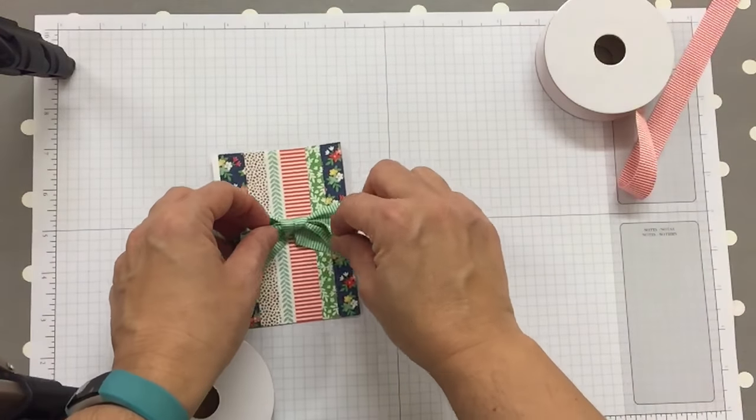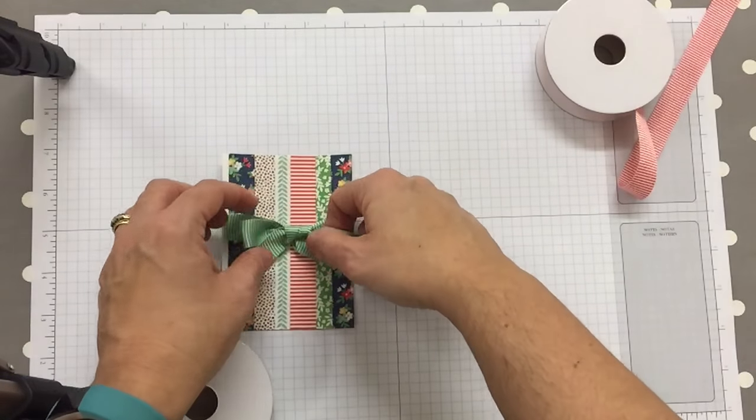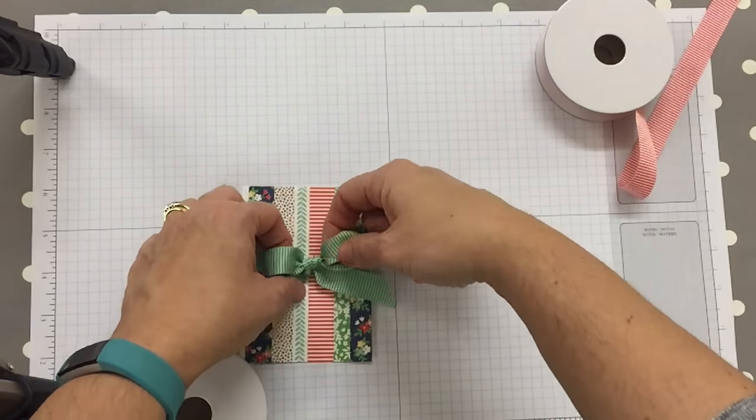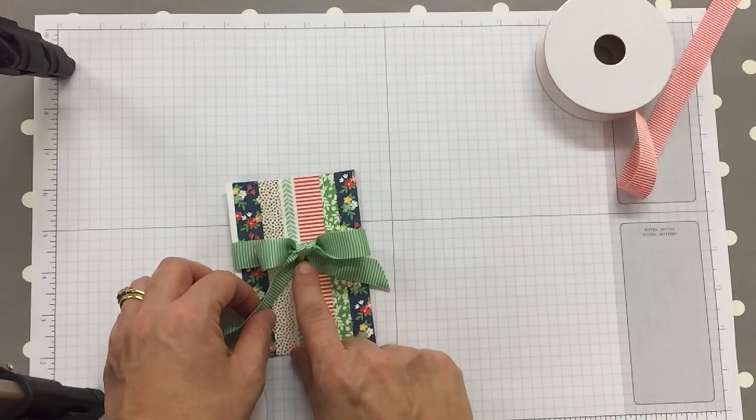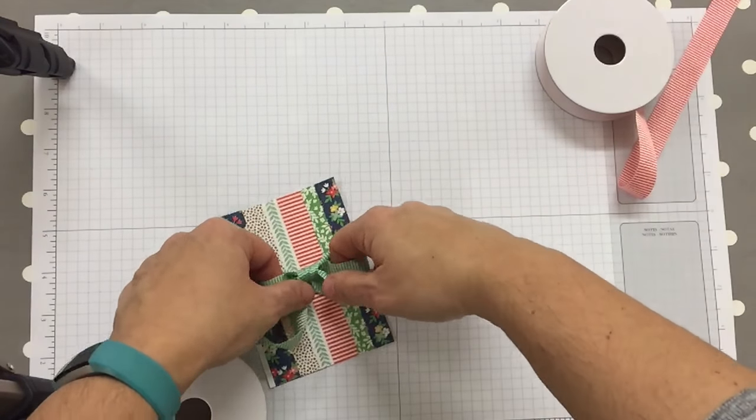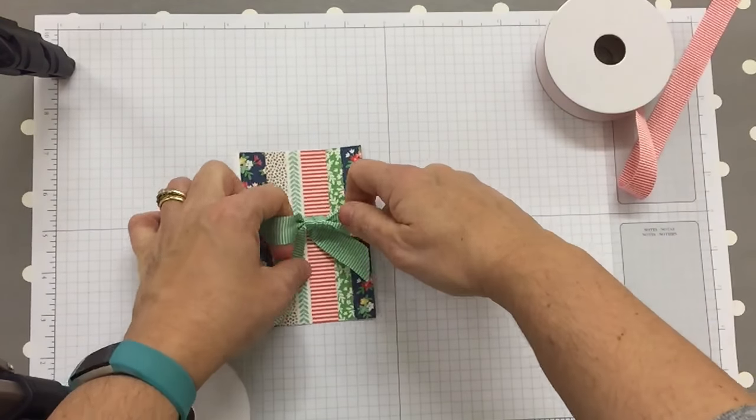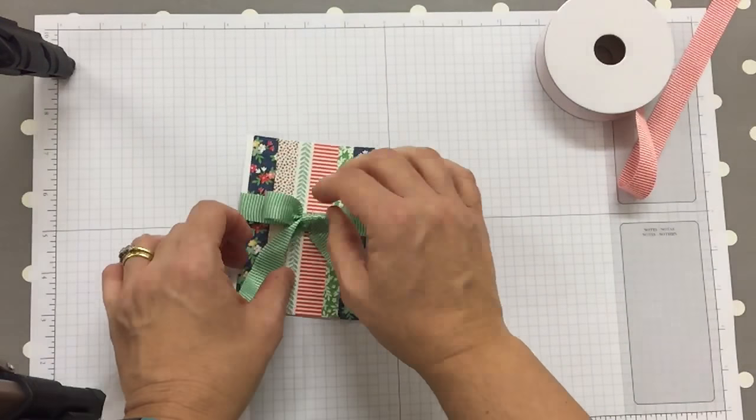Then I'm just going to do the zhuzhing part. What I like to do for the success of a neat bow is to get the knot in the middle and really tight, so I get my finger in the loops and I pull them against each other like that.